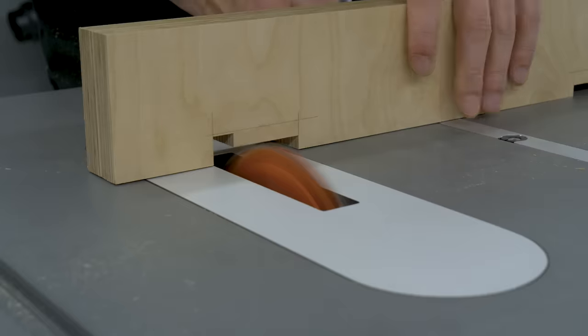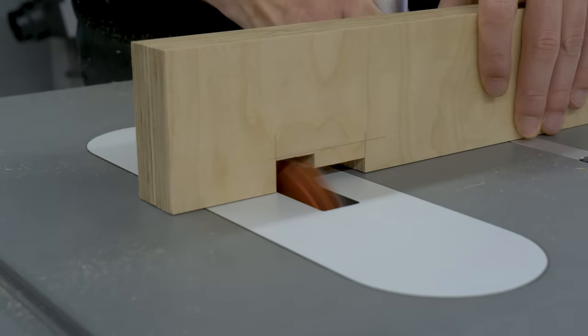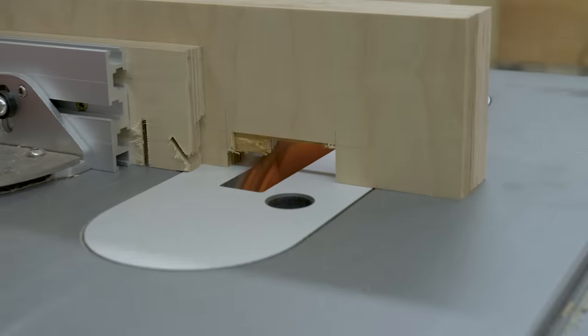To cut the rebates, I'll use the dado stack. I'll cut them in two runs to avoid straining the saw and blade.